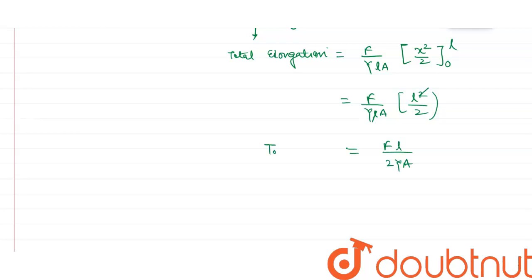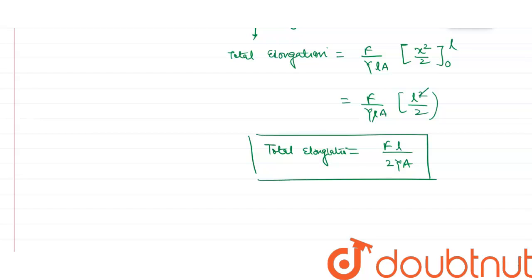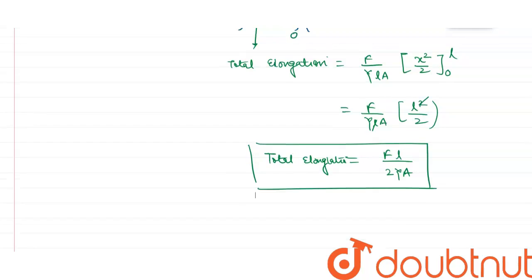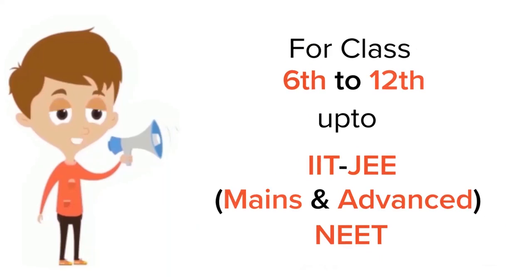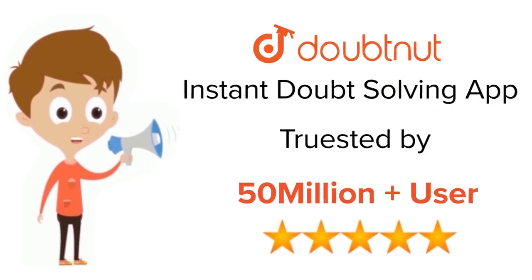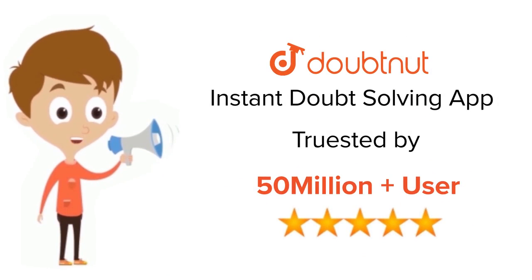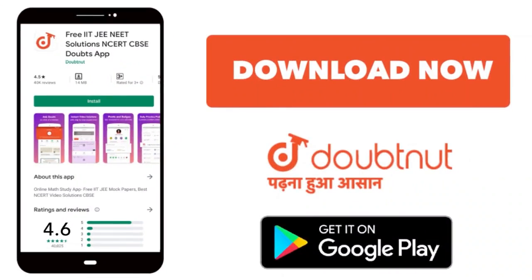So the total elongation in the block is equal to fl / (2ya). Thank you. For class 6 to 12, IIT JEE, and NEET level — trusted by more than 5 crore students — download DoubtNut today.